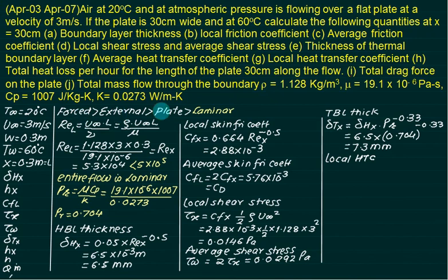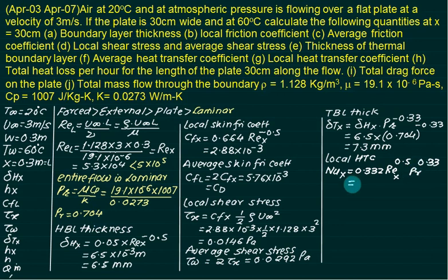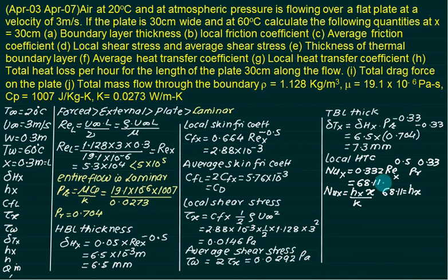The local Nusselt number for laminar flow is Nu_x = 0.332·Re_x^0.5·Pr^0.33. Substituting Re_x = 5.3×10⁴ and Pr = 0.704 gives Nu_x = 68.11. Since Nu_x = h_x·x / k, the local heat transfer coefficient is h_x = 68.11 × 0.0273 / 0.3 = 6.19 W/m²·K.